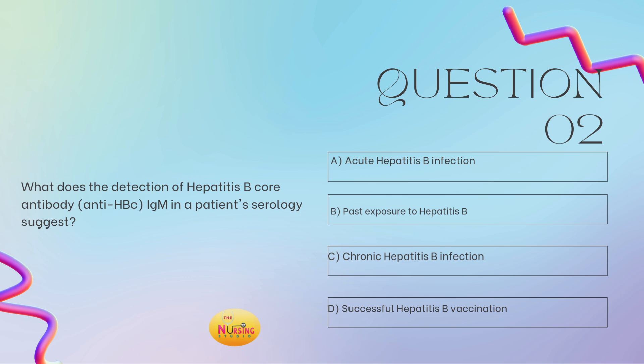Question number two: what does the detection of hepatitis B core antibodies like IgM in a patient's serology suggest? Is it A, acute hepatitis B; B, past exposure to hepatitis B; C, chronic hepatitis B; or D, successful hepatitis B vaccination? Take a moment and tell me what you got. So here, this question is asking us what does the core IgM indicate in a serology of hepatitis B? The answer is A, acute hepatitis B infection. Remember, IgM is for acute, whereas IgG is for chronic.